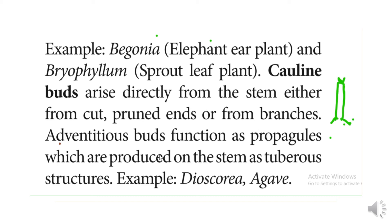Some adventitious buds function as propagules. Propagules are involved in reproduction — specifically vegetative propagation. These buds are propagules. These buds produce new plants.